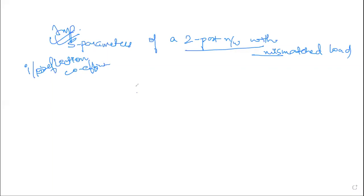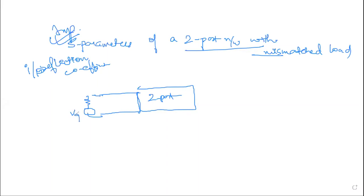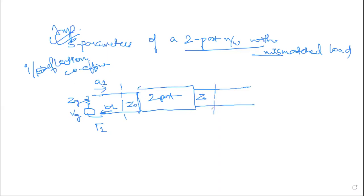To derive this, first consider a two-port network. On the generator side you have source voltage Vg and impedance Zg equal to Z0. The incident wave will be A1 and reflected wave B1. The reflection coefficient for port 1 is gamma 1. Z0 is the characteristic impedance. Across port 2, similarly you have Z0 as characteristic impedance, A2 as incident wave, ZL as load impedance, B2 as reflected wave, and gamma 2 as reflection coefficient for port 2.